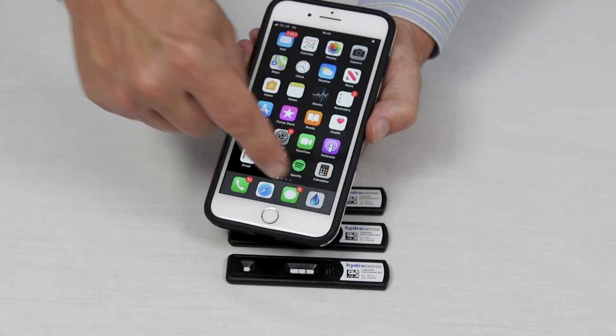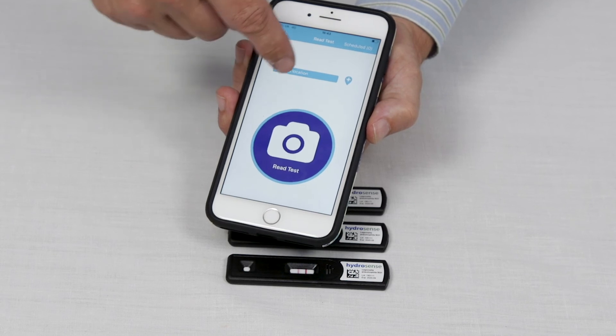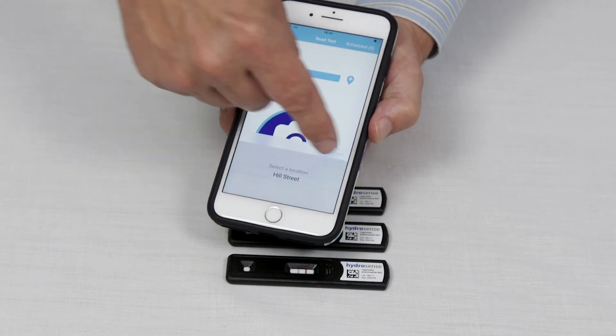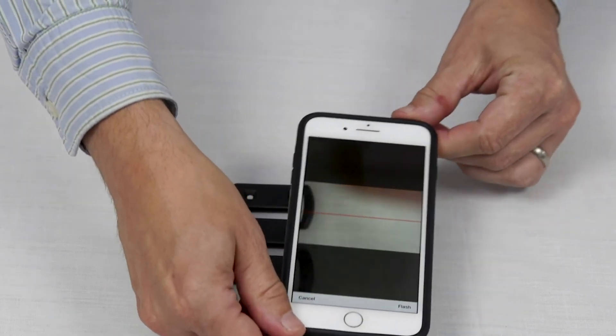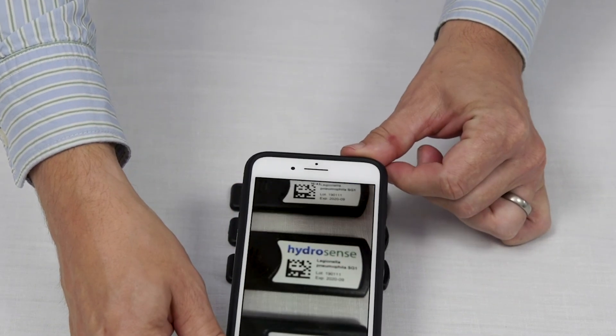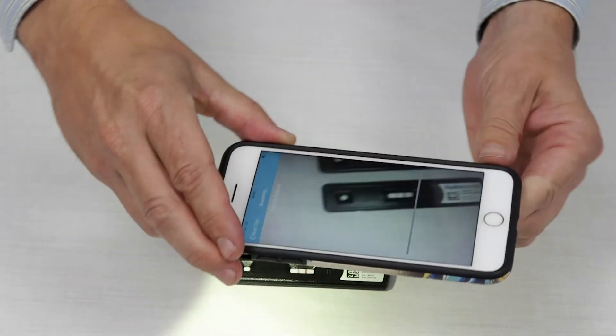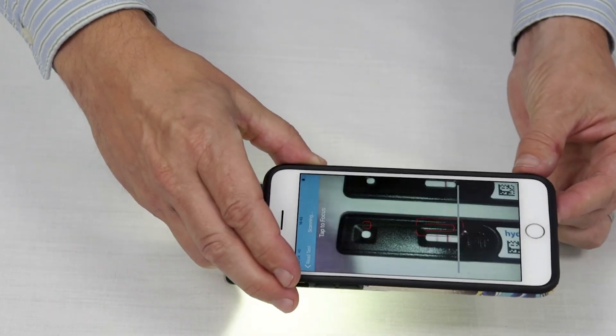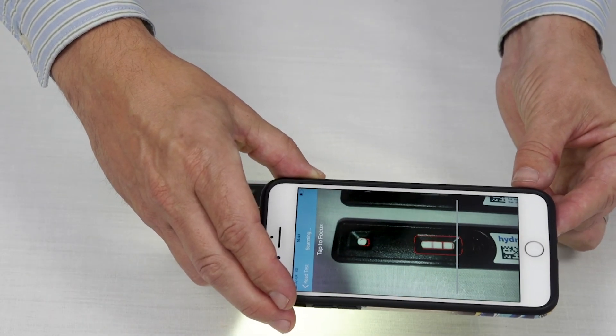To use the app, launch the app, select a pre-programmed location, and click read test. Scan the barcode, and then read the test by matching up the image on the screen with the cassette.